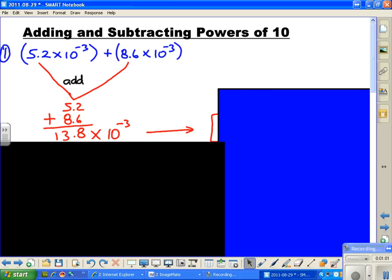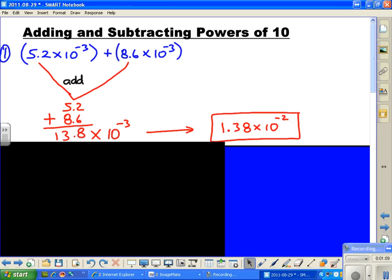And because the powers of 10 are the same, we can just multiply that by 10 to the minus 3. Our final answer will be in scientific notation, where we are moving the decimal back to the proper position.